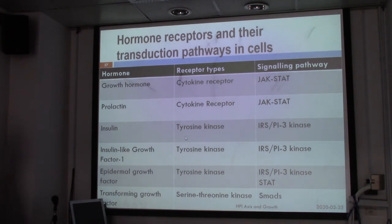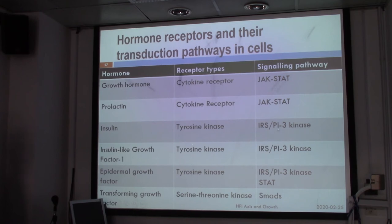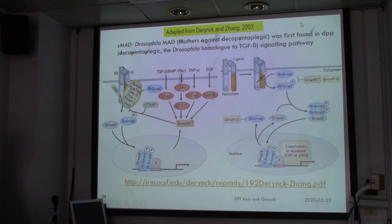For comparison of growth factors including growth hormone, prolactin, insulin, IGF-1, EGF, and TGF — they have different receptor types. Growth hormone and prolactin use the cytokine receptor type with JAK-STAT signaling. Insulin and IGF-1 use the tyrosine kinase receptor type, causing the IRS and PI3-kinase pathway. EGF also sometimes stimulates STAT. TGF stimulates the SMAD pathway through serine-threonine kinase receptors.